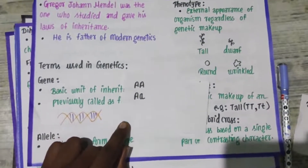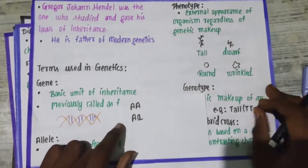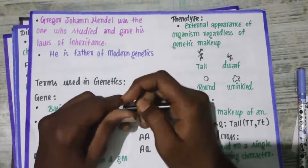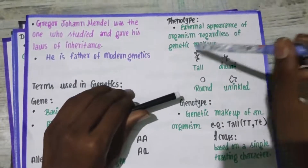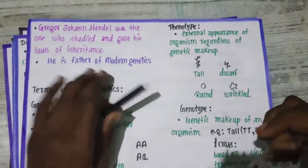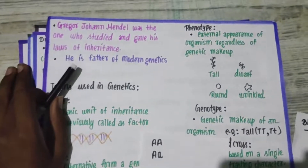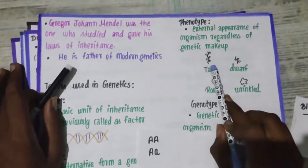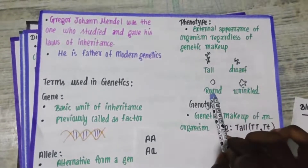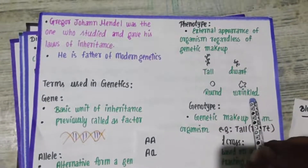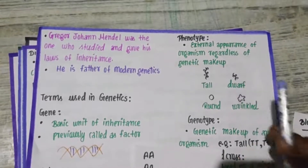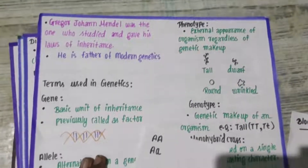Now let's talk about phenotype. What is phenotype? It is the external appearance of an organism, regardless of genetic makeup. For example, this plant is tall, this plant is dwarf; this seed is round shape, this is wrinkled shape — that external appearance is what we call phenotype.